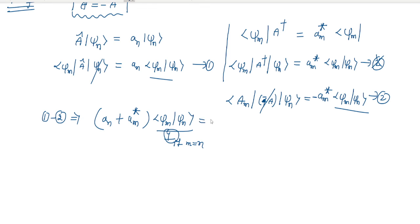We know if m equals n this becomes 1, so aₙ + aₘ* = 0, which means aₙ = -aₘ*. So this is the proof. The eigenvalues of anti-Hermitian are purely imaginary or equal to 0.